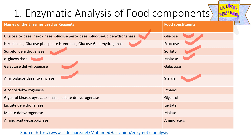Alcohol dehydrogenase enzyme activity is measured in order to estimate ethanol content. Glycerol kinase, pyruvate kinase and lactate dehydrogenase enzyme activities are measured in order to estimate glycerol content present in food. Lactate dehydrogenase enzyme activity is estimated in order to check lactate content and malate dehydrogenase enzyme activity is measured in order to check malate content. Amino acid decarboxylase enzyme is estimated in order to check amino acid content present in the food material.